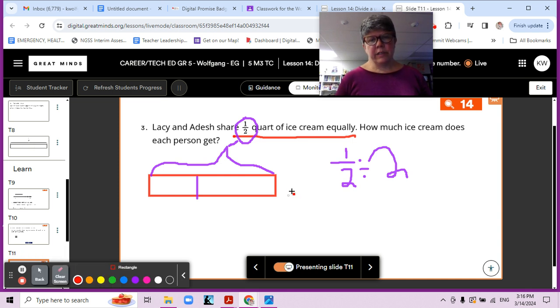Let's extend our tape diagram so that we have a whole quart rather than a half of a quart. And let's cut that one in half as well. So, now this is one quart. One quart. And this is one half quart.